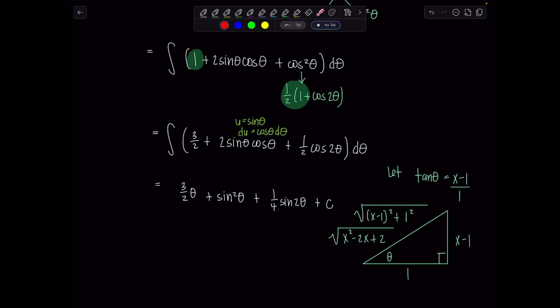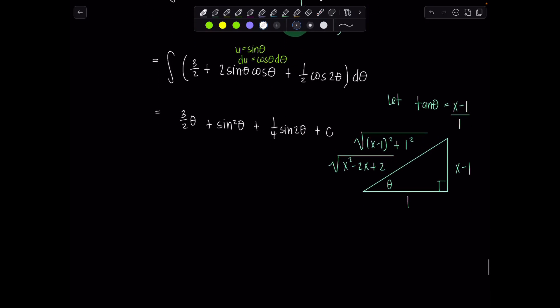Now before we can go back to rewriting everything in terms of x, notice this is a triangle for theta. Yet here we have sine of 2 theta. So we need to use our double angle identity so that everything in our antiderivative is in terms of theta. No 2 thetas allowed. I'm going to write it like this so you get ready for the triangle. So if I replace sine 2 theta with 2 sine theta cosine theta, the 2 and the 1 fourth will simplify to 1 half sine theta cosine theta plus c. Perfect.